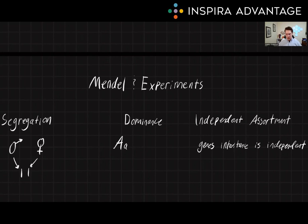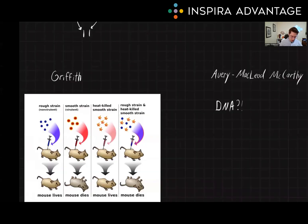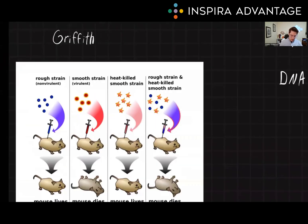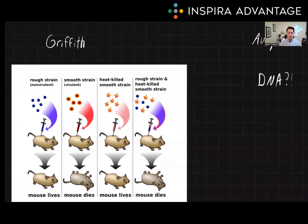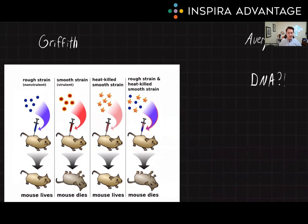While modern genetics has shown us that there are exceptions to these rules, the MCAT still wants you to know these and will test you on them, so make sure they make sense. Now let's move into the three foundational genetics experiments you should be familiar with for the MCAT.